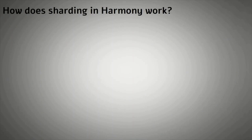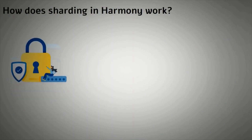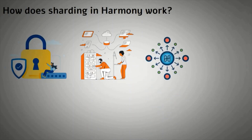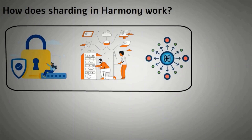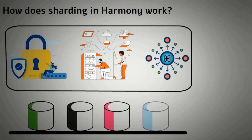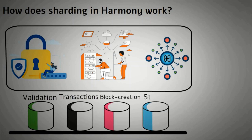How does sharding work in Harmony? One of Harmony's keys to providing security, scalability, and decentralization is sharding. The Harmony sharding splits the network into four sections that work in parallel. Users can choose the shard they want, which distributes the network's workload. Validation, transactions, block creation, and staking are all done separately on each shard.